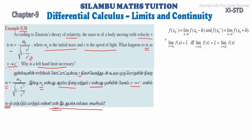For a function's limit to exist, the left-hand limit and right-hand limit must give the same value. In this case, why is only the left-hand limit necessary? We need to understand why we consider only the left-hand limit here.